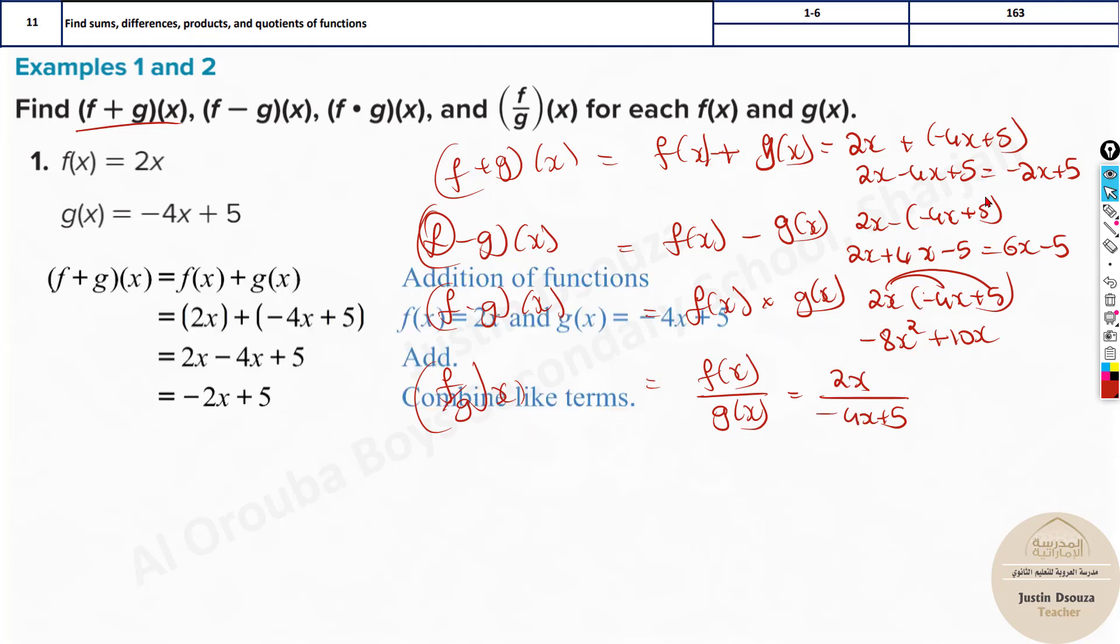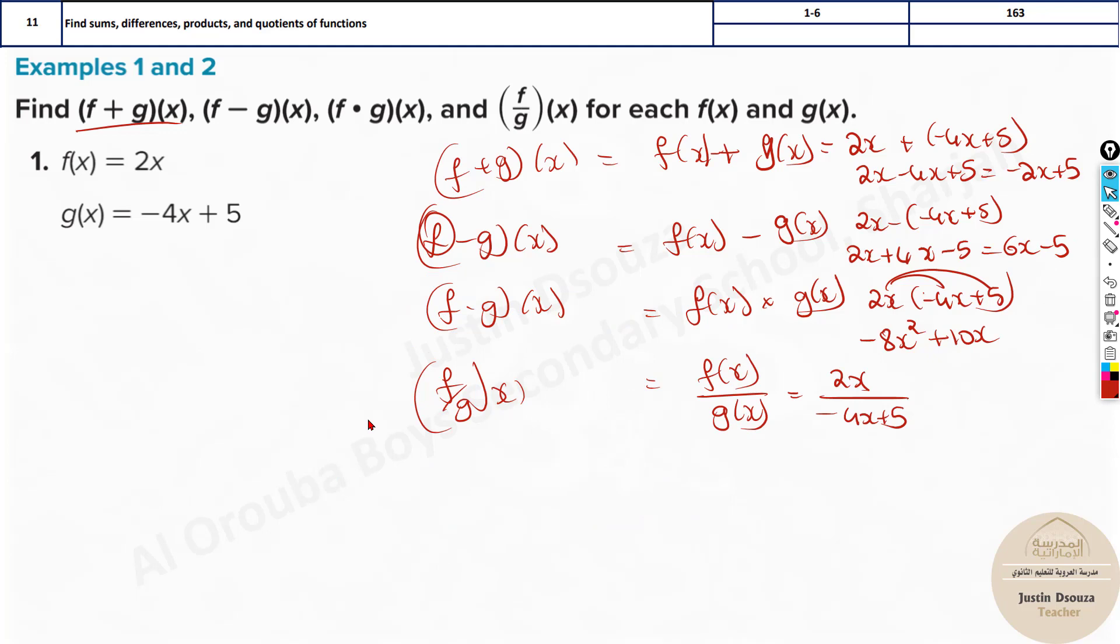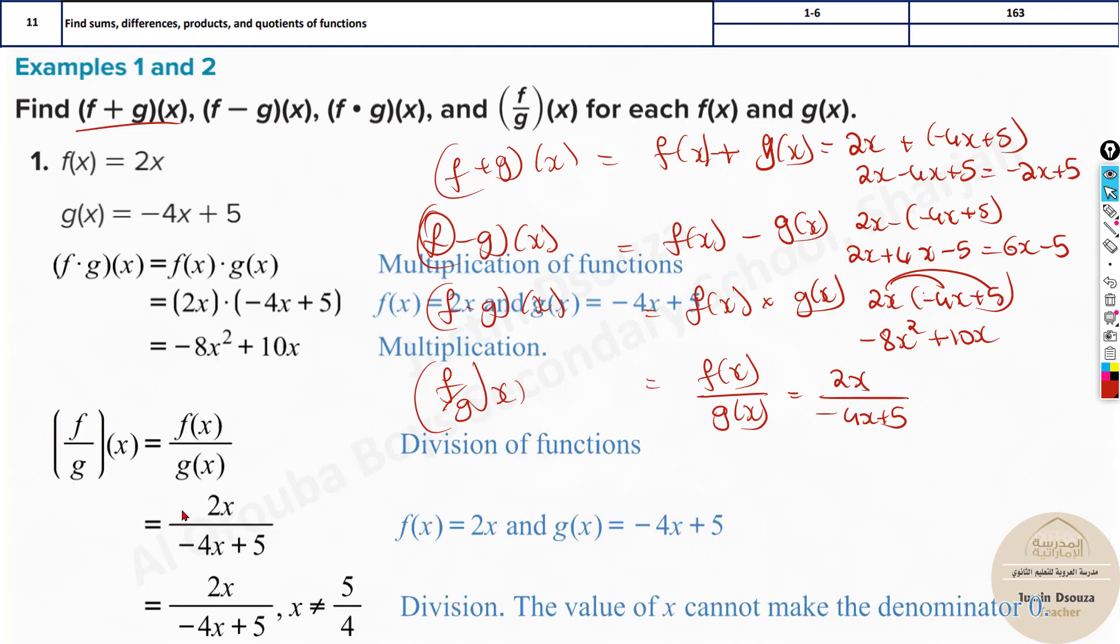Let us just check the answers. It is minus 2x plus 5. The first one. Yes. And then we got 6x minus 5. And for multiplication we got minus 8x square plus 10x. And lastly for division we have this. This is fine. 2x divided by minus 4x plus 5. But what is this? x cannot be equal to this number. Now what is anything divided by 0? You can't divide any number. Say x divided by 0 is not possible. It's undefined.